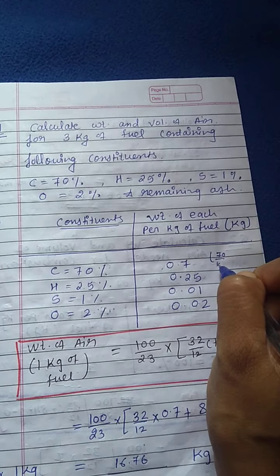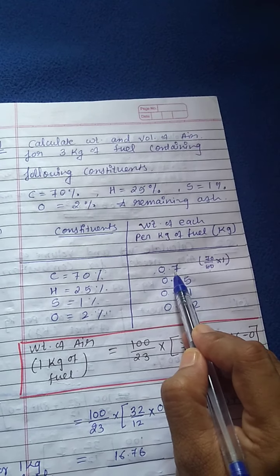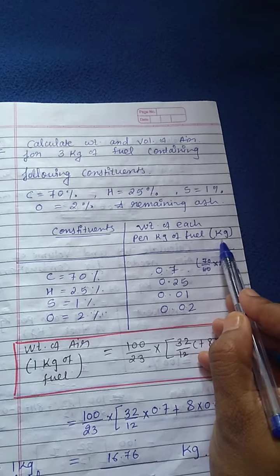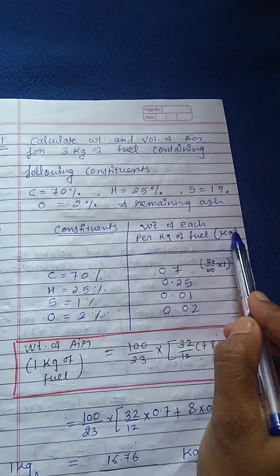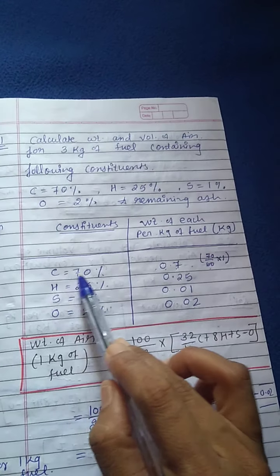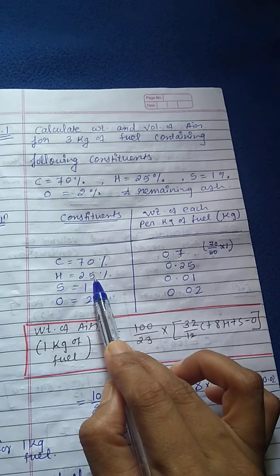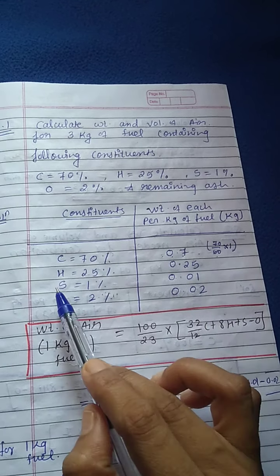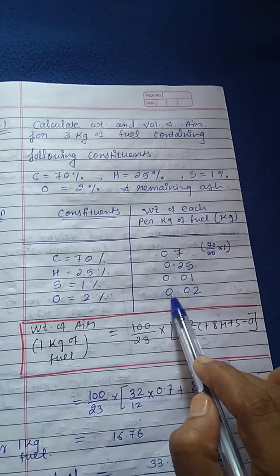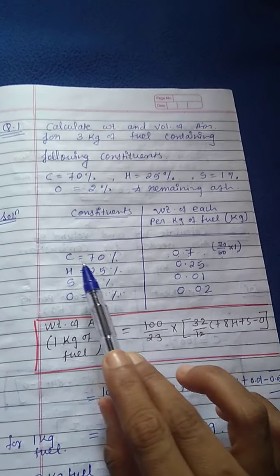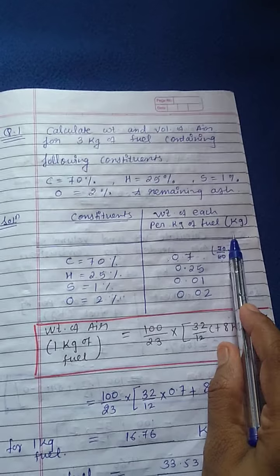Continuing the table: hydrogen is 25%, so weight of hydrogen = 0.25 kg. Sulfur is 1%, so weight of sulfur = 0.01 kg. Oxygen is 2%, so weight of oxygen = 0.02 kg. So the first step is to convert each constituent from percentage to weight in kg per kg of fuel.